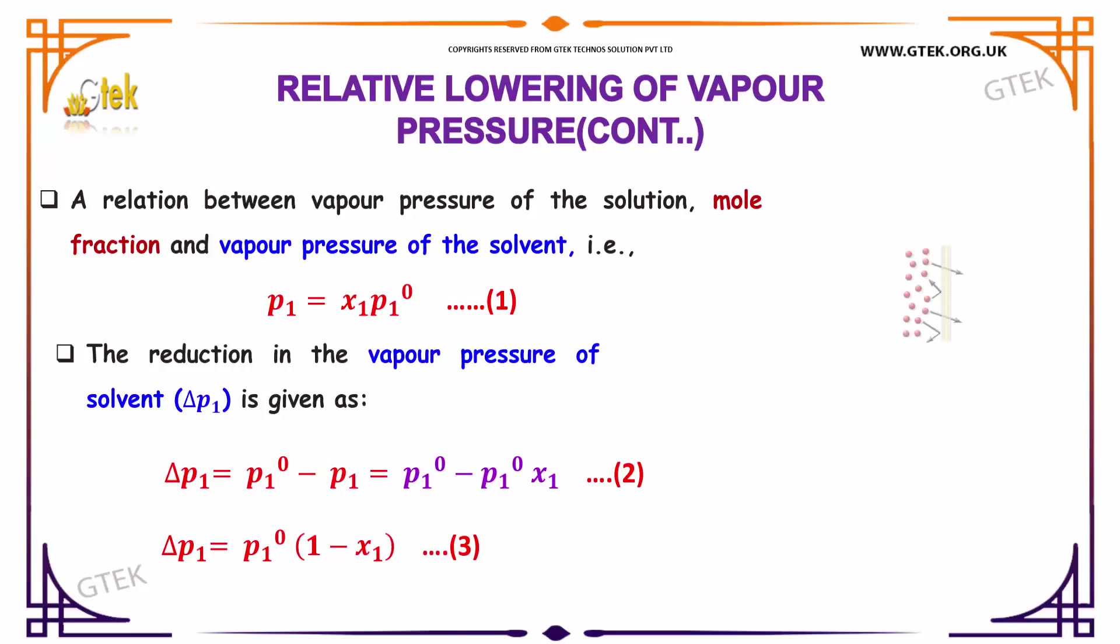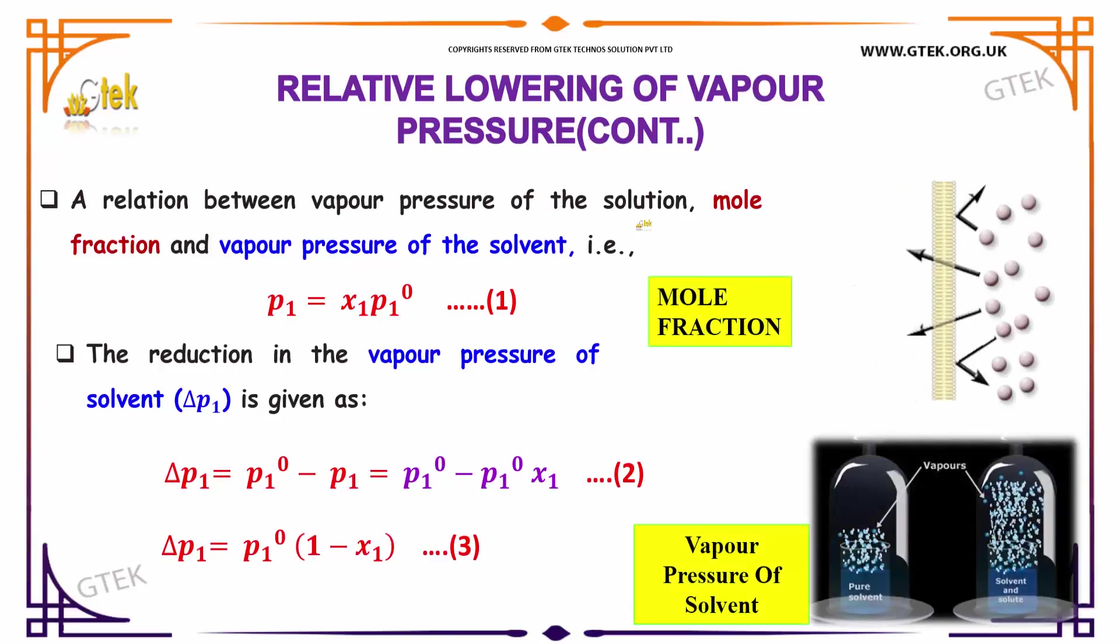The relation between vapor pressure of the solution, mole fraction, and vapor pressure of the solvent is given here. P1 is equal to x1 times P10.